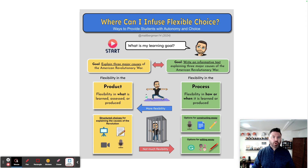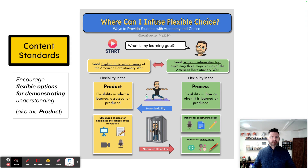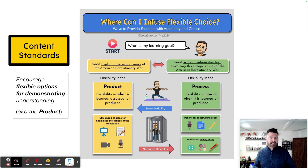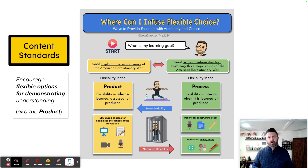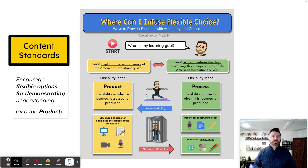Where can we provide choice? If we have a content standard where we want students to know something, we might develop a goal like: "Explain the three major causes of the American Revolutionary War." With that particular goal, we have different ways of assessing — we could develop a PowerPoint presentation, a multimedia presentation, a podcast, or even an essay.